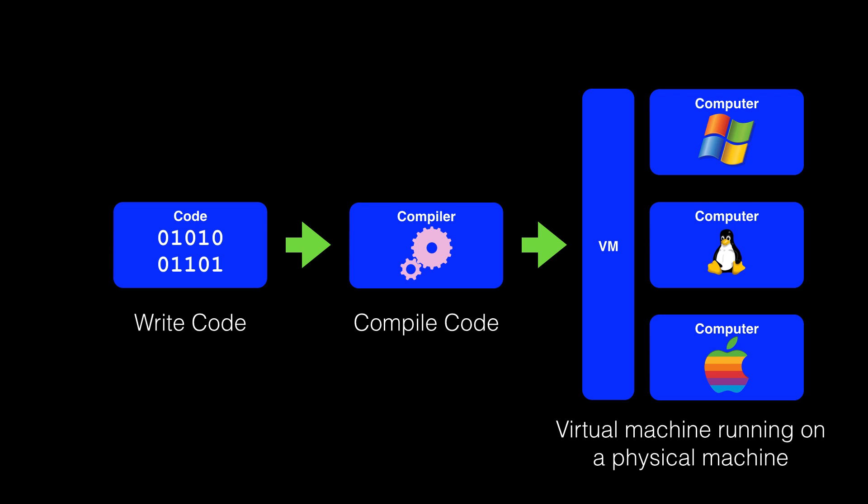A virtual machine reads instructions from your program and then translates them into instructions your computer can run. When you write and compile a Java application, you are compiling it for a Java machine. Now, no one has a Java machine — we all run Macs, Linux, or Windows.